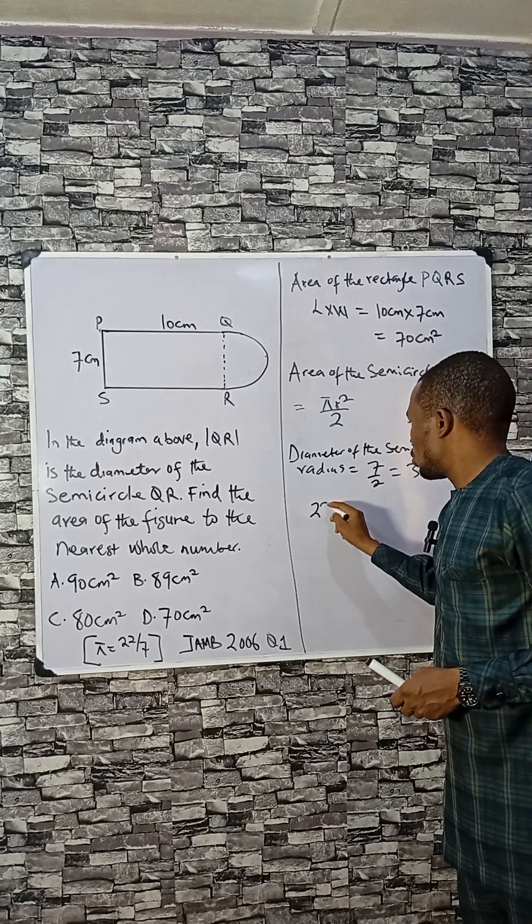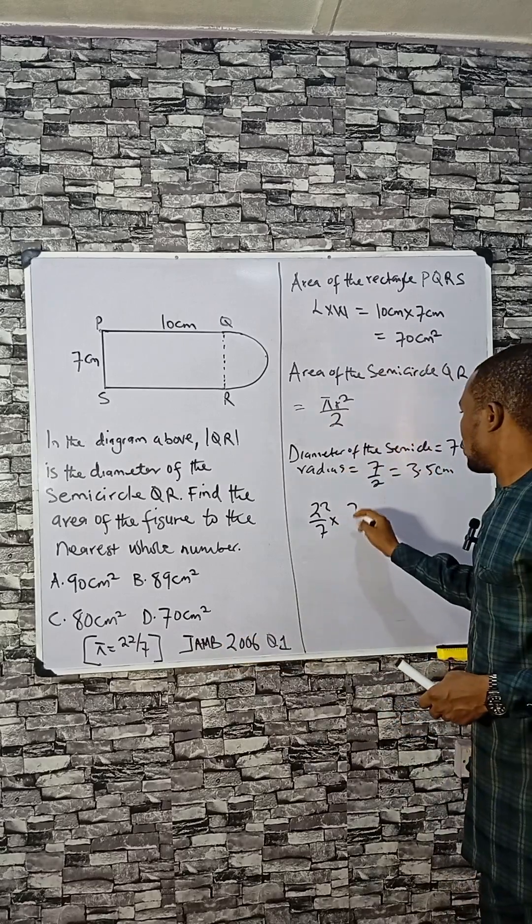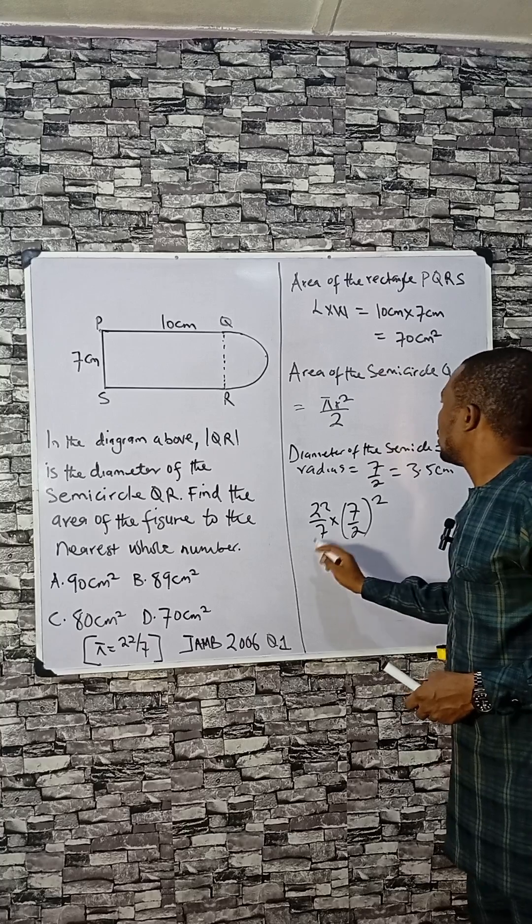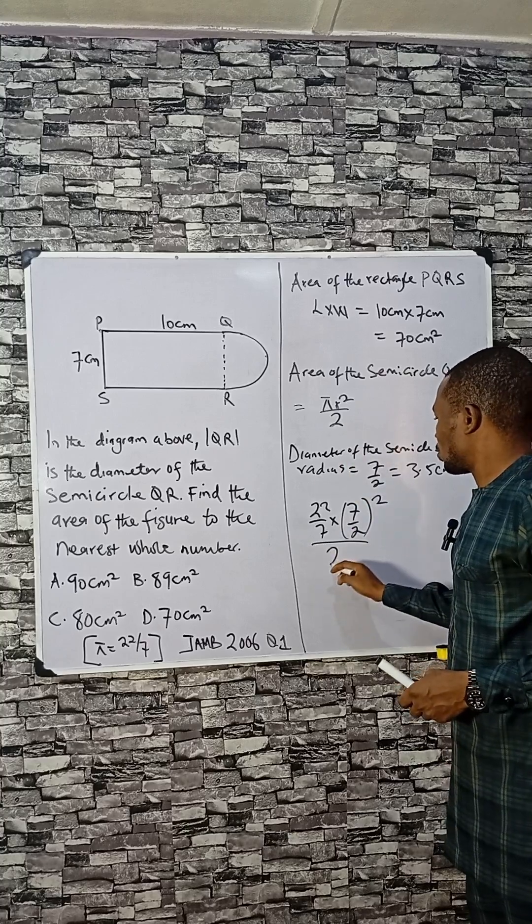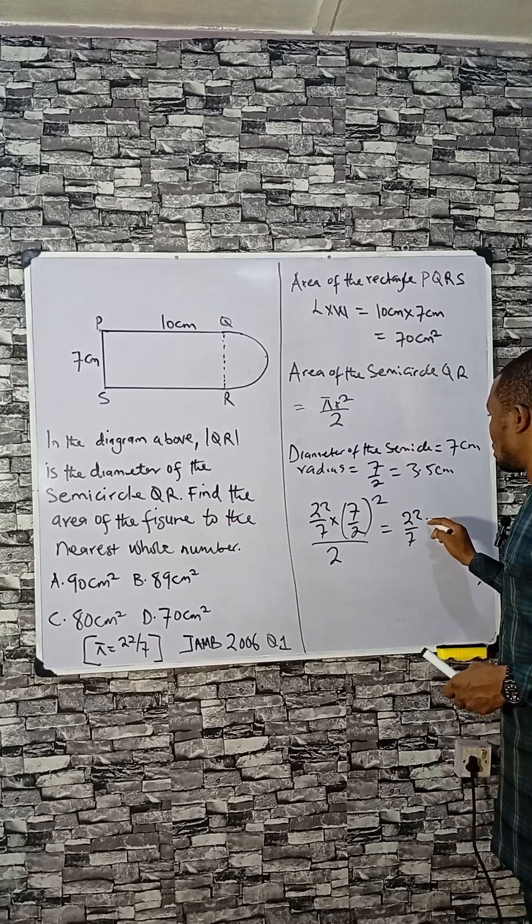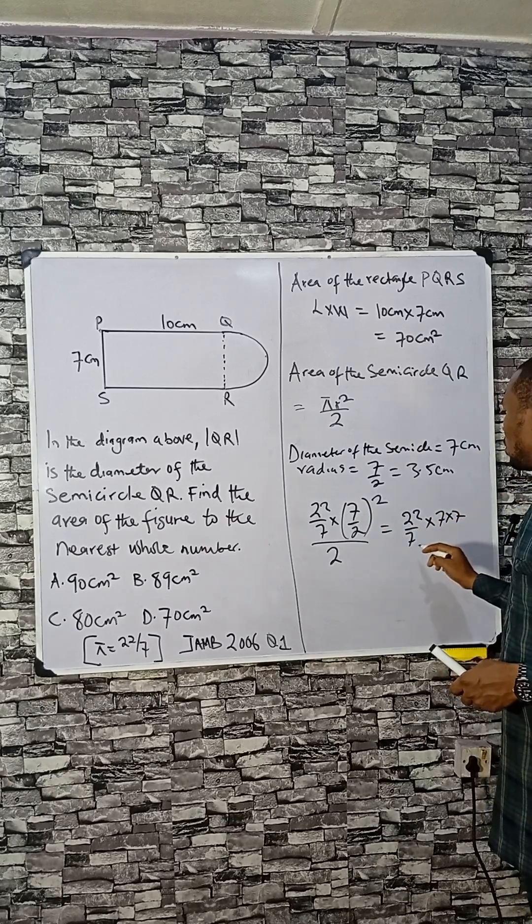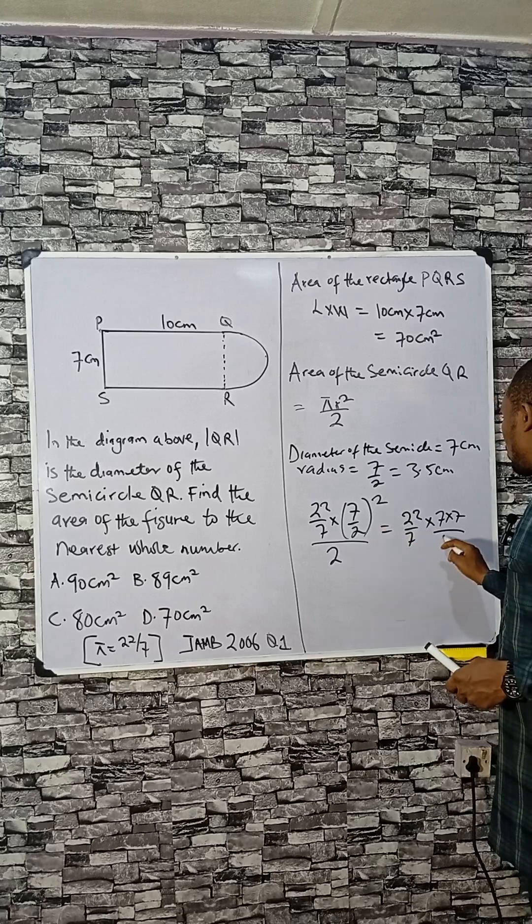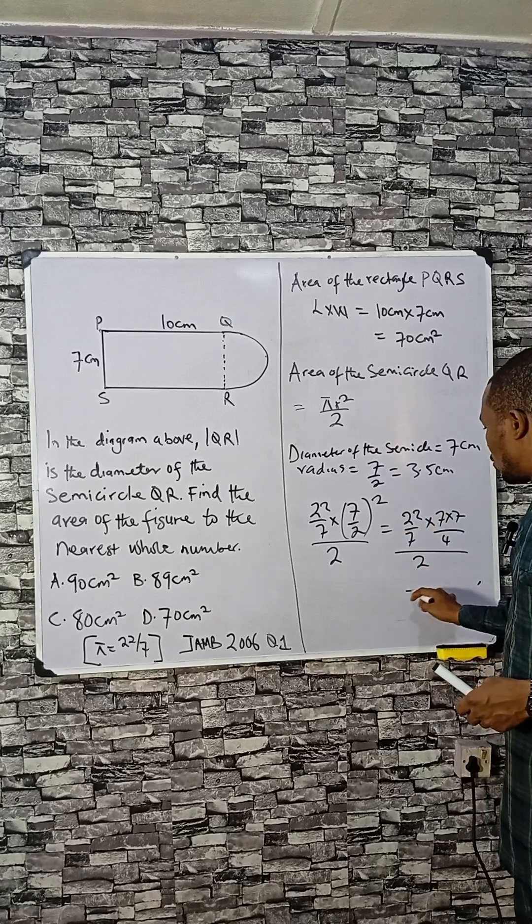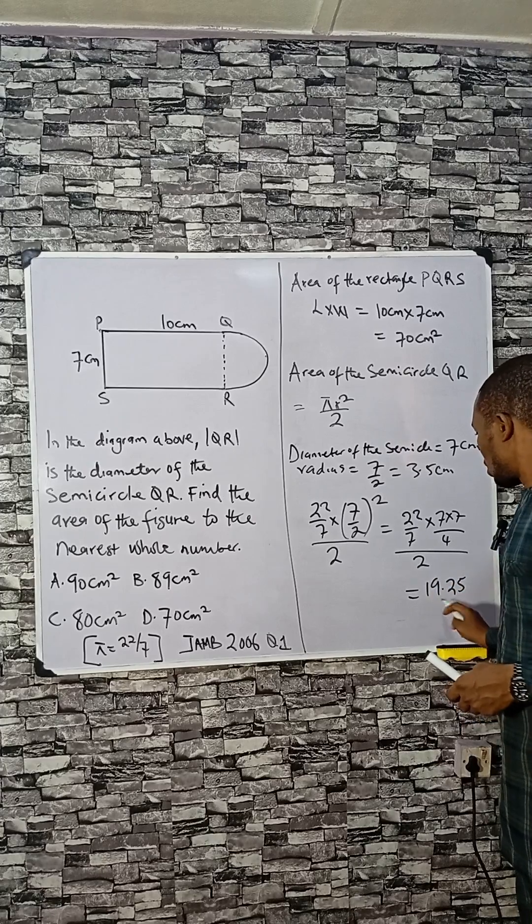Pi is 22 over 7. Radius, which is 7 divided by 2, squared, then divided by 2. The 2s cancel, leaving 22 times 7 times 7, divided by 4, divided by 2. If you solve this out, you will have 19.25. Use your calculator and check.